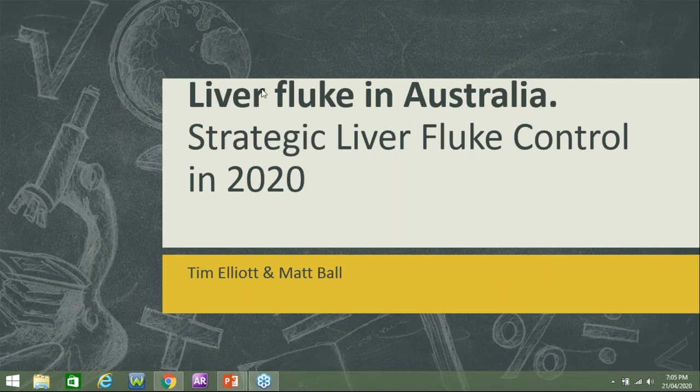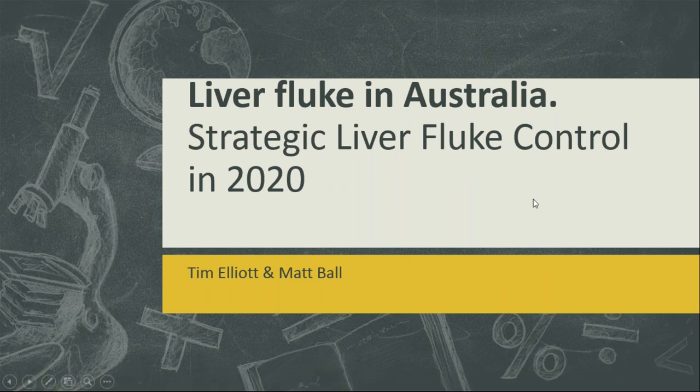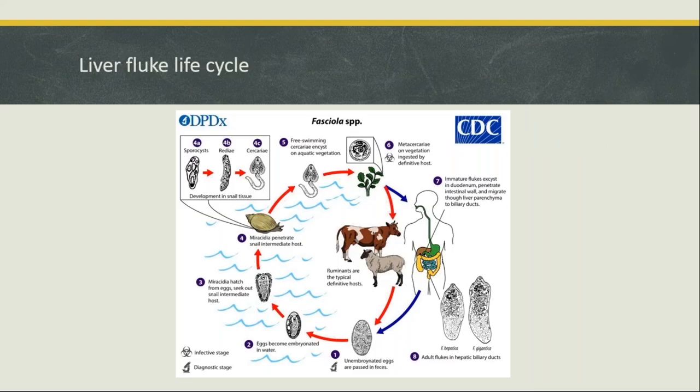Before you can do any sort of control on a parasite, the first thing you need to do is understand the life cycle. The life cycle of liver fluke is a bit different from what you'd normally see with sheep barber's pole worm or scour worms. With those, all development happens on the pasture by itself without an intermediate host. With liver fluke, it requires an intermediate host — the freshwater snail — the most common one in Australia being Ostrompolia tomentosa.